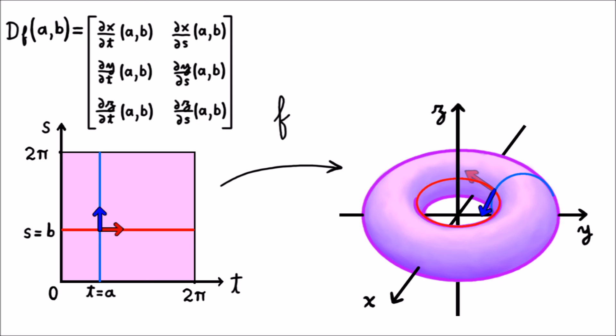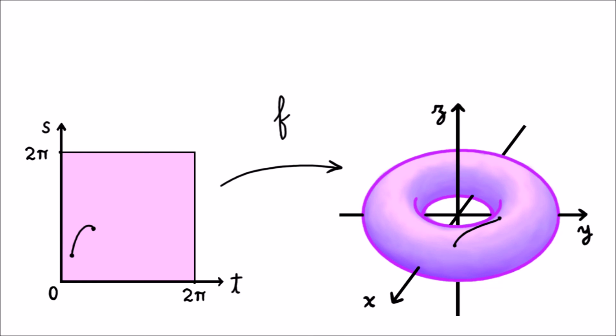So when we take our derivative matrix and plug in a and b, we get a linear transformation. We can think of this linear transformation as taking vectors in the plane based at the point (a, b), and turning them into tangent vectors on the torus based at the point f(a, b). Here's one way to think about it: suppose you have a particle moving around in your square along a differentiable path. We can imagine another particle moving around on the torus, simultaneously following an analogous path. So when one particle is at p, the other particle is at f(p). At any given moment, these particles both have velocity vectors, one in the plane and the other in space, tangent to the torus. What's the relationship between these two vectors? The matrix of derivatives at the relevant point gives us exactly that relationship. If you feed this matrix the velocity vector in the plane, you always get the velocity vector in space.